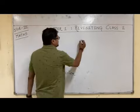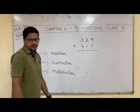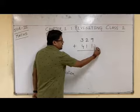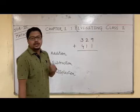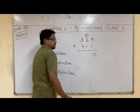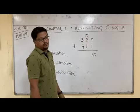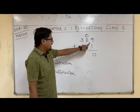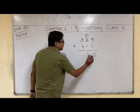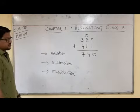Let me take two numbers: 329 plus 411. We will do this addition slowly so you can understand. 9 plus 1 is 10 — 0 is written, 1 is carried over. 2 plus 1 is 3, plus 1 carried gives 4. And 3 plus 4 is 7. The answer is 740. This is how this addition works.